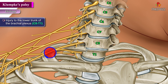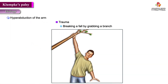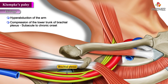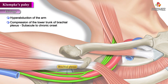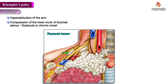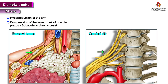Etiology: Klumpke's Palsy can occur due to hyperabduction of the arm, which can be the result of trauma, such as breaking a fall by grabbing a branch, or during birth injury which results from excessive traction on the arm during delivery. Compression of the lower trunk of the brachial plexus can also occur as a result of a Pancoast tumor or an extra rib, popularly known as a cervical rib. This compression can be subacute to chronic in onset.